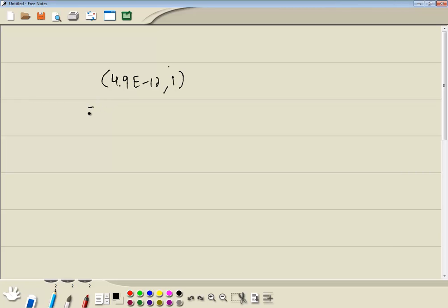Well, this would equal four point nine e to the negative twelve plus one i. Because this is our real part and this is our imaginary part. That's not anything there, this is a one.